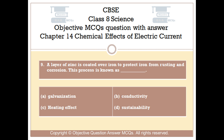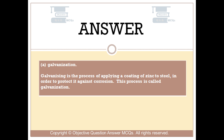Question number 9. A layer of zinc is coated over iron to protect iron from rusting and corrosion. This process is known as: Option A Galvanization, Option B Conductivity, Option C Heating Effect, Option D Sustainability. The right answer is Option A — Galvanization. Galvanizing is the process of applying a coating of zinc to steel in order to protect it against corrosion.